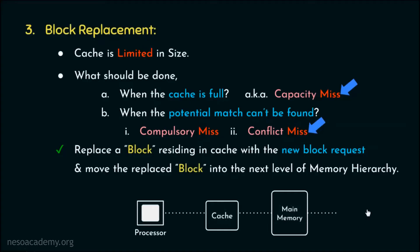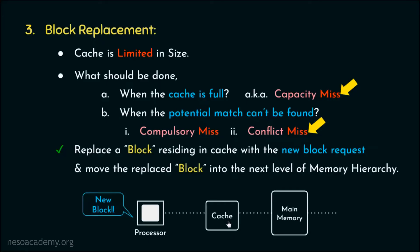For a realistic illustration: if the processor asks for a new block and it's a cache miss — either due to capacity miss or conflict miss — one cache block is selected and moved to main memory, making space for the newly requested block, which is then brought from main memory into the cache. That's how block replacement takes place.